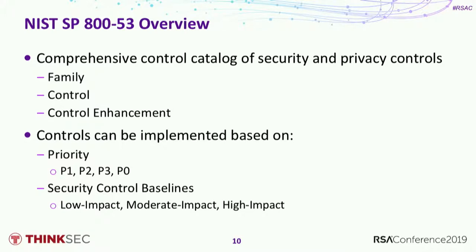SP 853 is intended to be a comprehensive control catalog — the list of all ingredients that could potentially go into your recipes. Will you ever implement all of the 853 controls in your organization? Of course not. One thing 853 calls out is that you can implement controls based on priority and what they call your security control baseline. Is your organization operating in a low-impact, moderate-impact, or high-impact environment? Based on your risk profile, you'll decide to implement a different set of these controls.